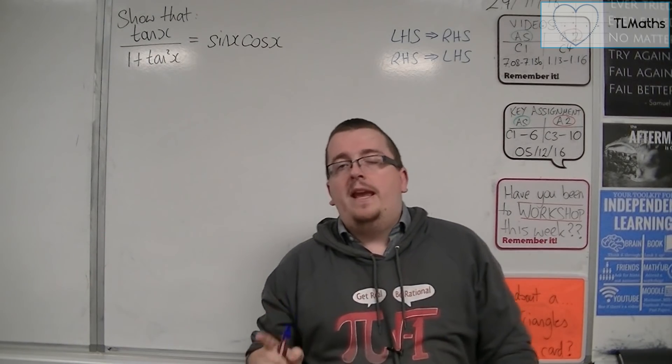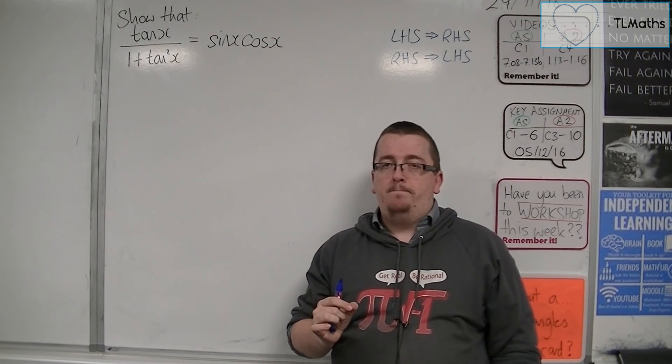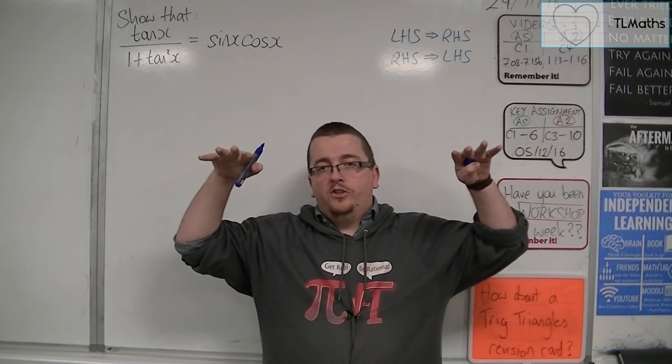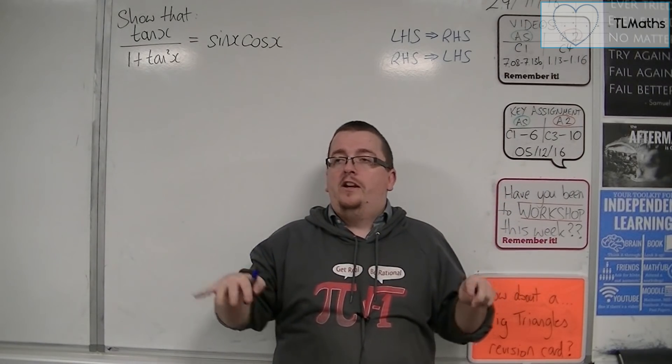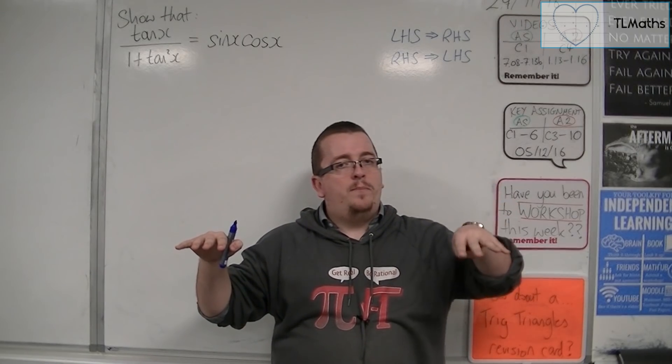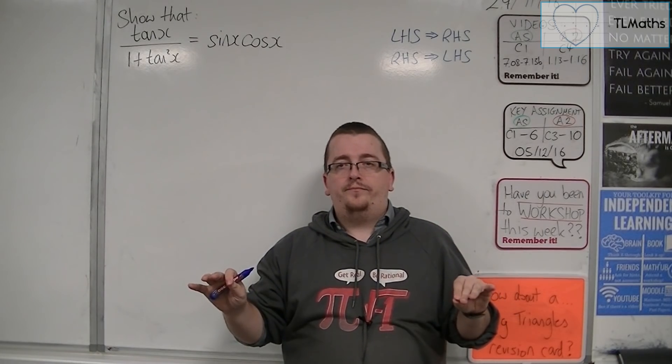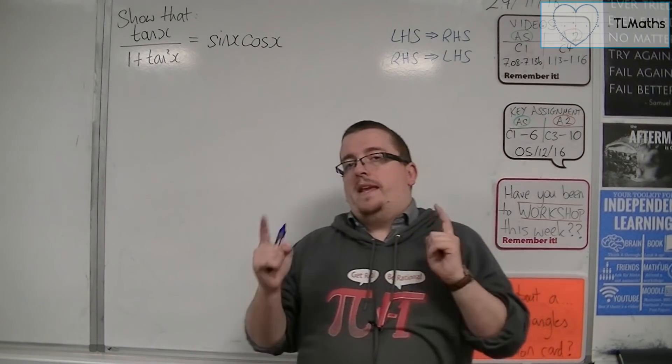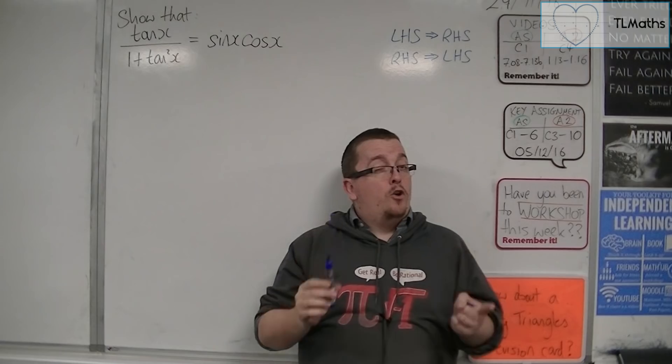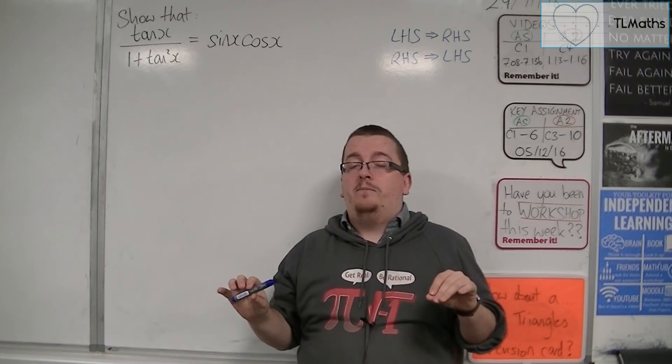The third option is to work with both sides simultaneously, and then what you want to do is you want to get to precisely the same thing on both sides. So, we work with the left-hand side, get it down to a bit, and then we work with the right-hand side, get it down to a bit, and then what we find is these two things here are the same. Now, if you can do it by either of the first two methods, then by all rights that is better than working with both sides at the same time.